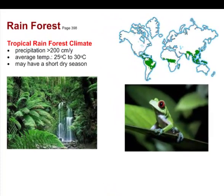Rainforests receive over 200 centimeters of precipitation per year and are quite warm, ranging from 25 to 30 degrees Celsius. Rather than distinct cold and warm seasons, they typically have a very wet season and a dry season, and are found in tropical locations.